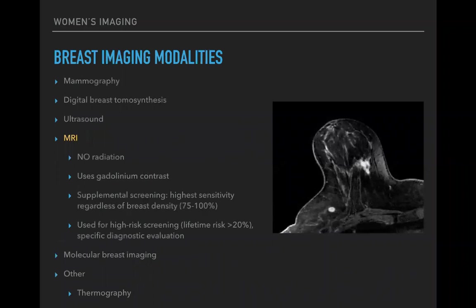MRI uses magnetic resonance of protons — no radiation — but does use intravenous gadolinium contrast. It's used for supplemental screening for high-risk women whose lifetime risk is greater than 20 percent of developing breast cancer, and has the highest sensitivity of any modality regardless of breast density, approaching 100 percent. It is used in selected patients as it is expensive, time-consuming, and not without risk due to the intravenous injection.